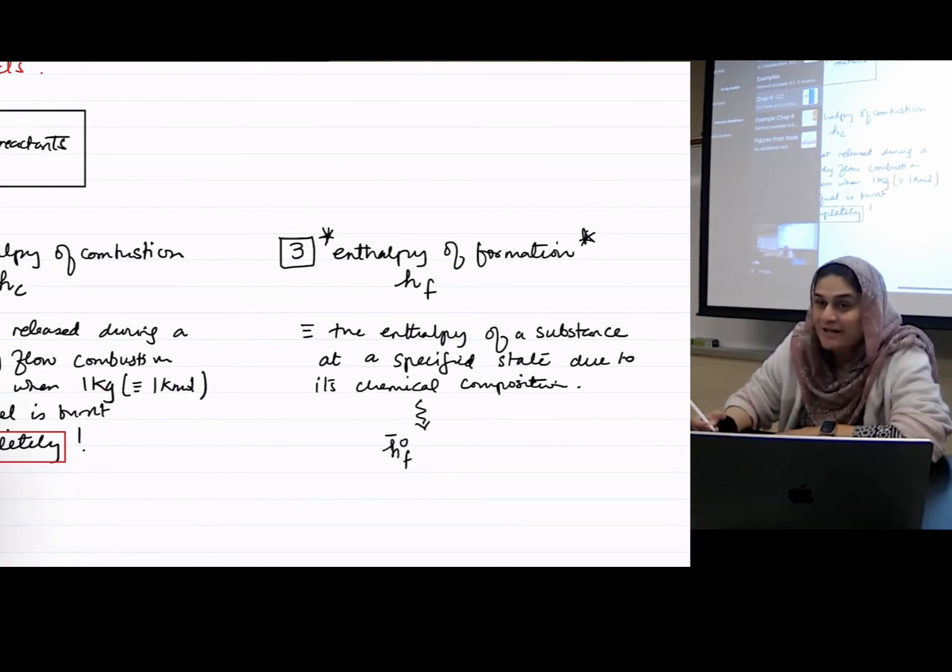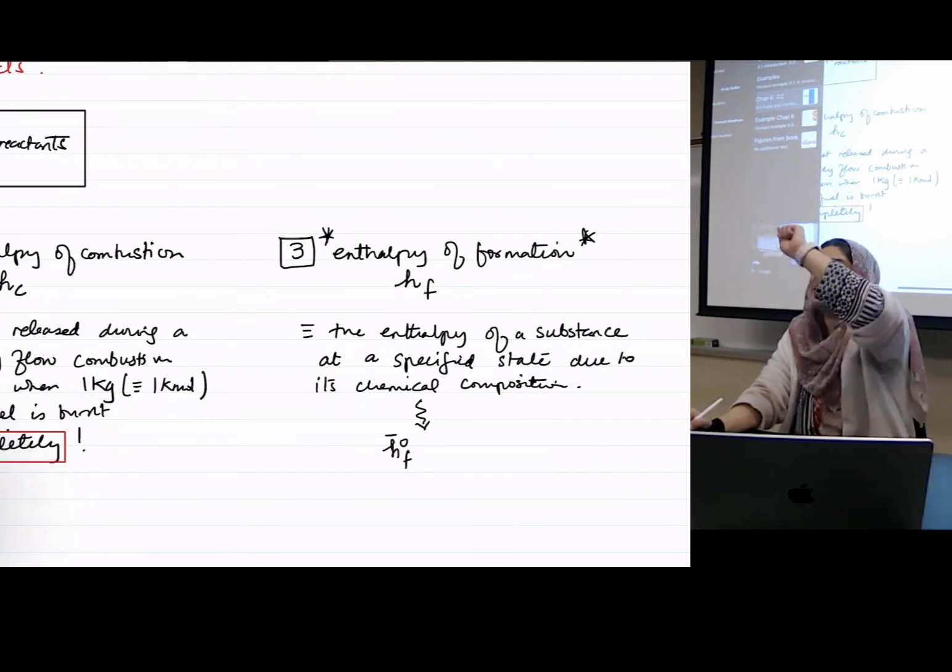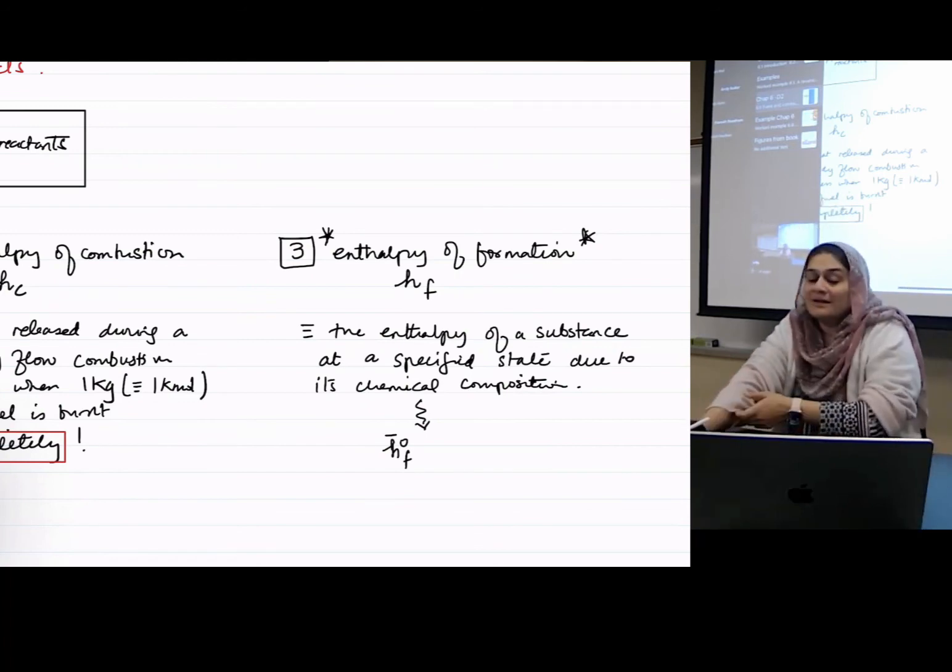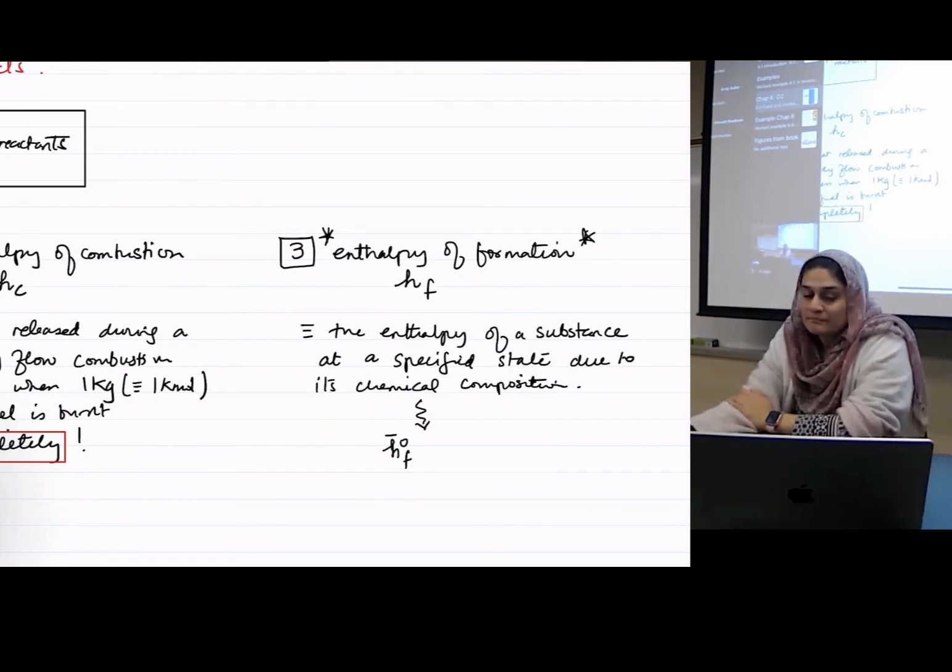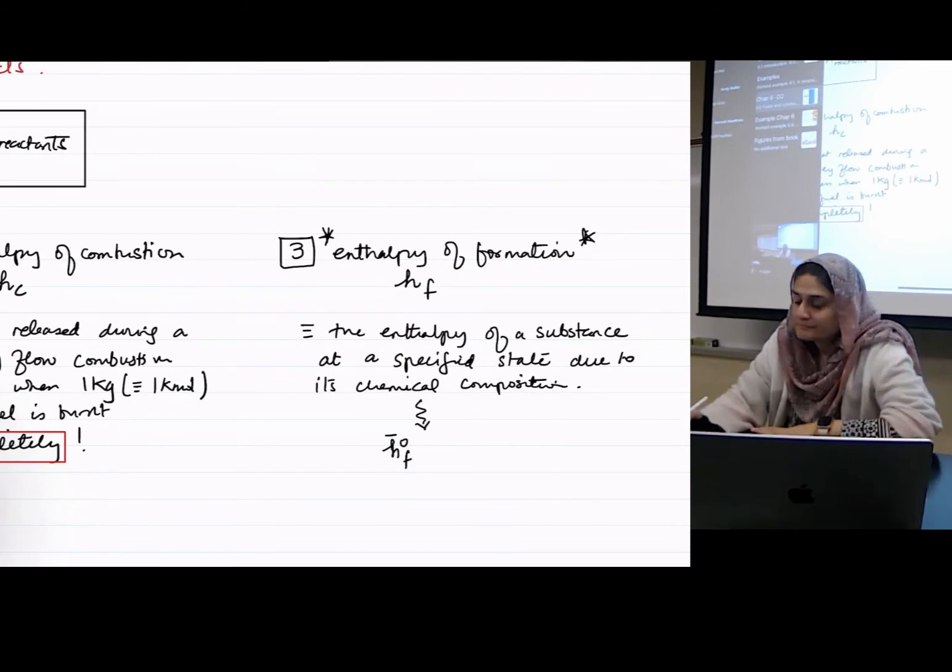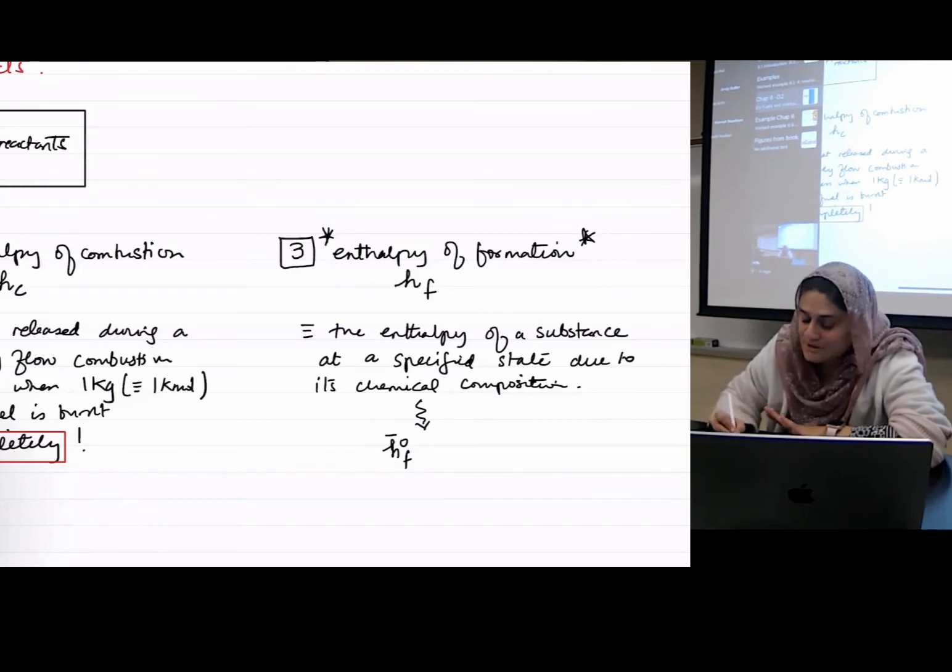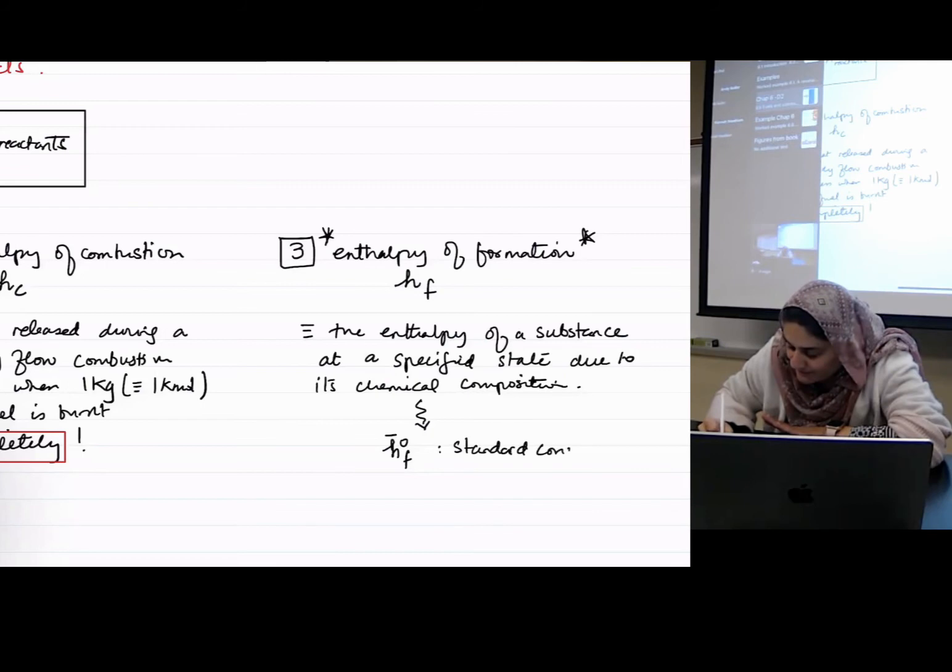So, usually you will see this written as that. Instead of just hf, it'll have a zero and a bar on the top. Why do you think it has a zero? That's meant to describe the standard condition. And what is the standard condition? One ATM and 25 degrees Celsius.